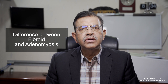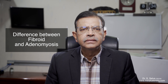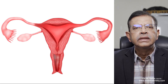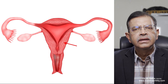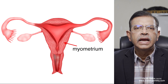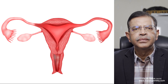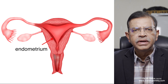What is the difference between a fibroid and an adenomyosis? In both conditions, the uterus is enlarged. This is a diagrammatic representation of a female genital tract. This is the muscle of the uterus and it's called the myometrium. This is the inner lining of the uterus and it is called the endometrium.